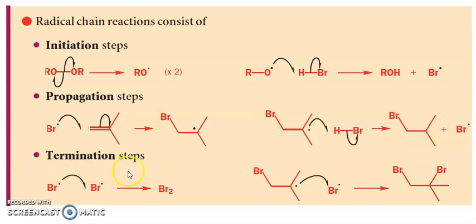And the last are termination steps. Br radicals combined together forming Br2. And you can see these Br radicals further combine with these radicals forming this product. So whatever radicals are available, it utilizes them and then termination occurs.